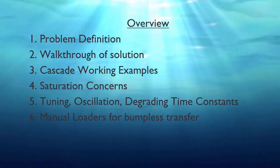This set of slides is about working with the parallel cascade problem using the integral-only method, which is often seen in industry. The slides are split into several areas: firstly problem definition, then a typical solution walkthrough, working through an example with various set point changes, demonstrating what happens when you take a loop out of cascade and go to saturation, how you can end up with oscillation and how tuning needs to address the number of loops in cascade, and finally typical implementations of manual loaders to improve bumpless transfer and allow for biased cascaded slave loops.